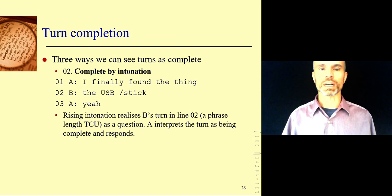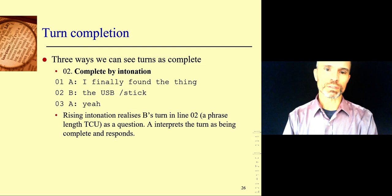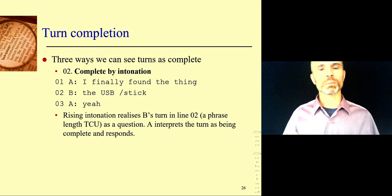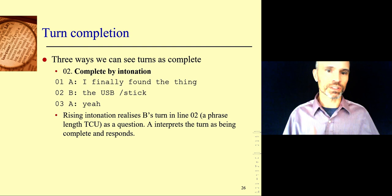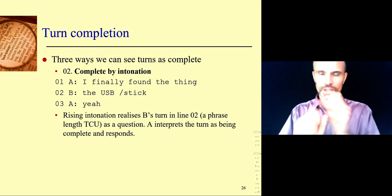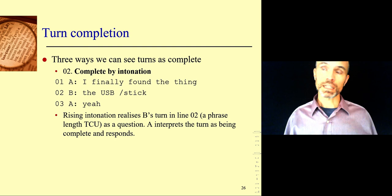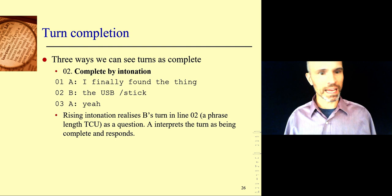Complete by intonation. A says I finally found the thing. B says the USB stick. Now, the USB stick on its own is a phrase — it doesn't have a subject or a verb. But because of the rising intonation on stick, that intonation helps A see that B is asking a question. It's not grammatically an interrogative — an interrogative has to have the grammar to tell us it's a question. But it has intonation to show that B is asking a question. The USB stick? That works as intonation contributing to seeing that B's turn is complete. A realizes I can talk now in line three.